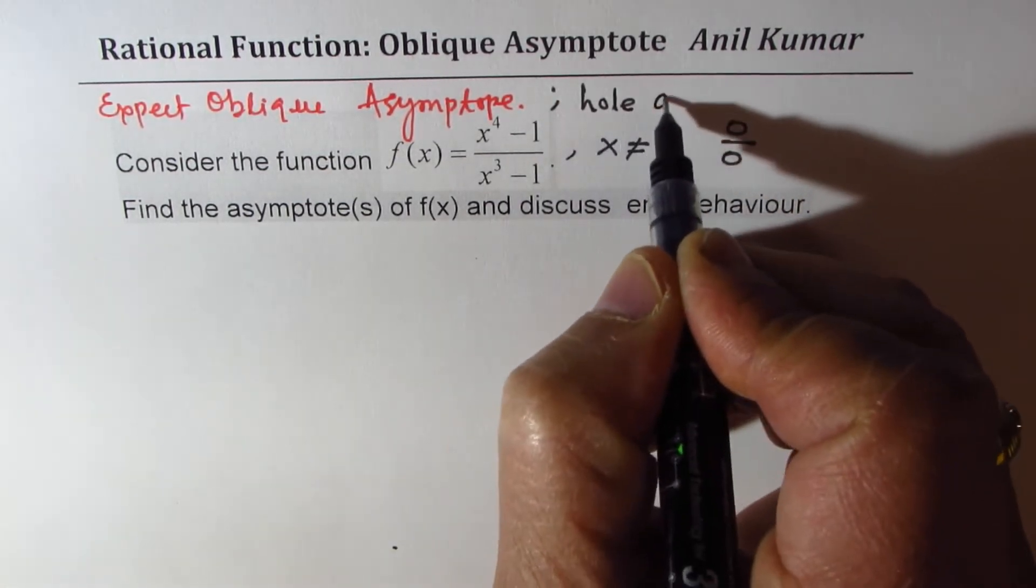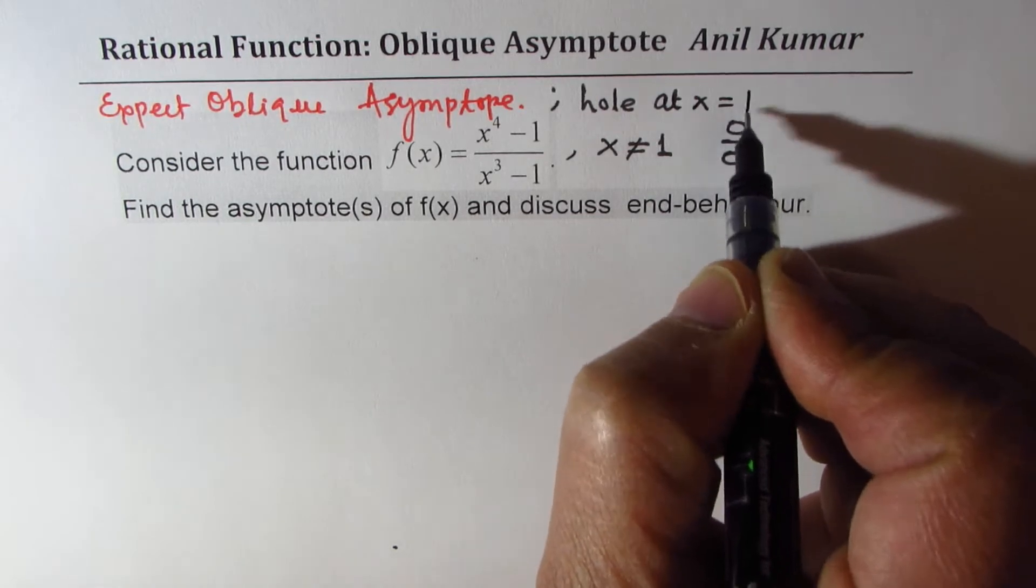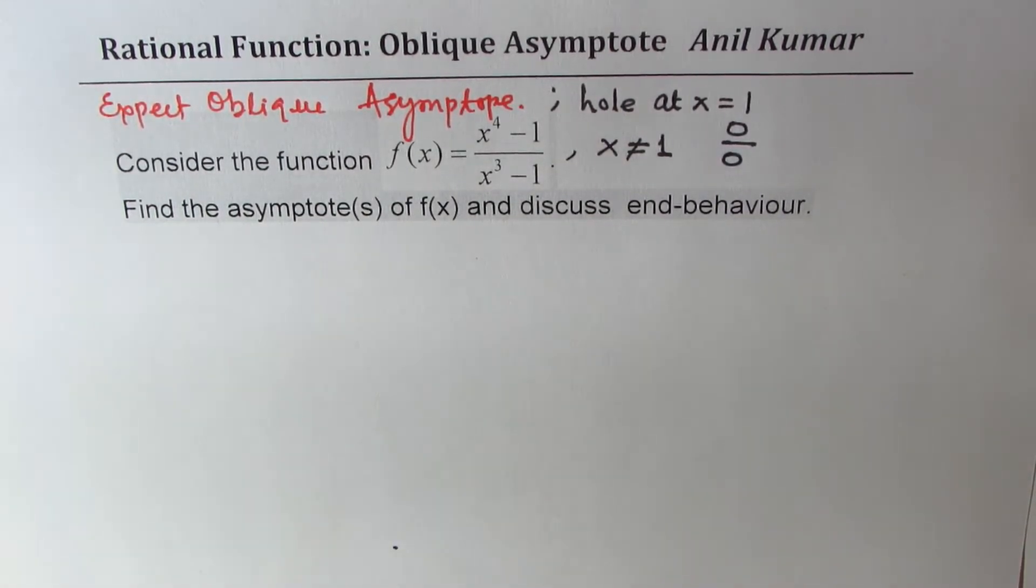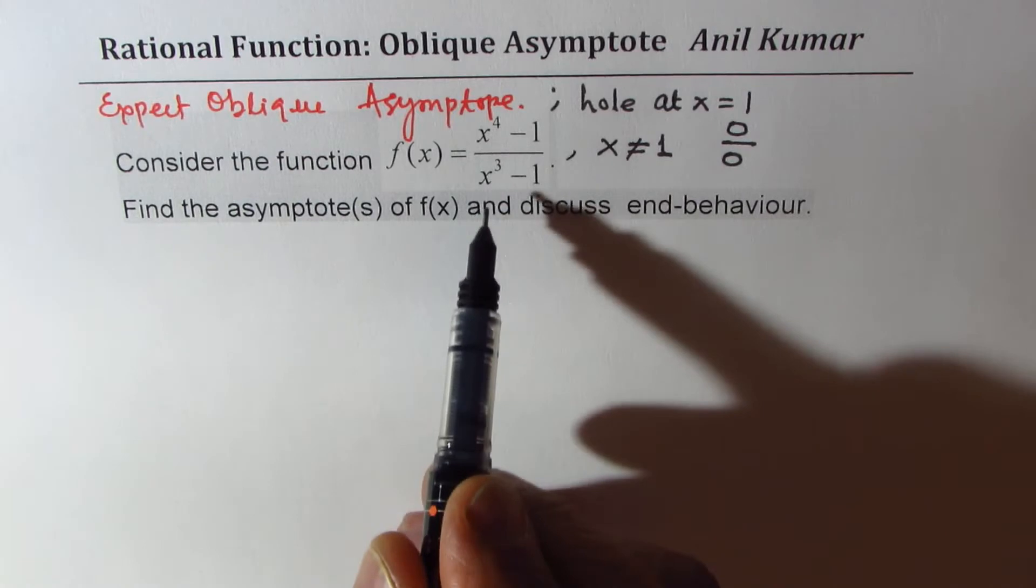Second, we have a hole at x equals 1, correct? Now, to begin with, let us factor this out, simplify, and then work on the equation.